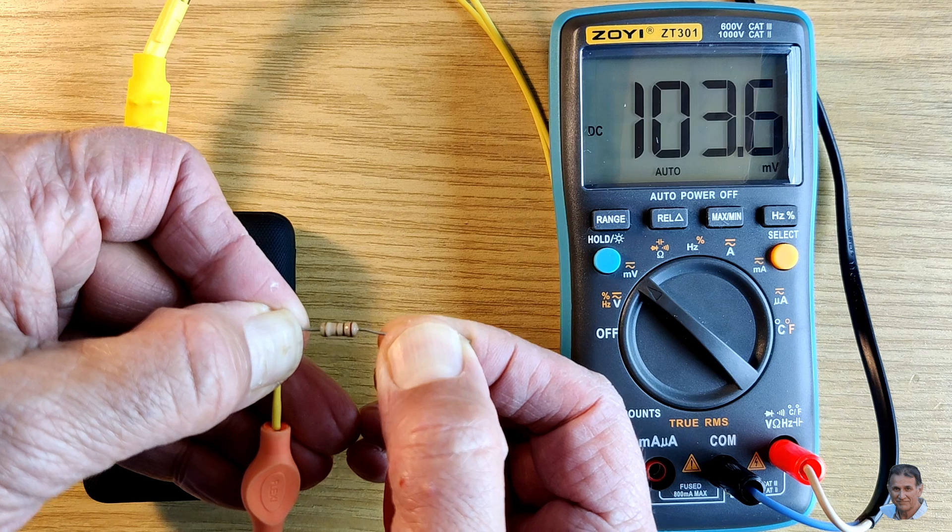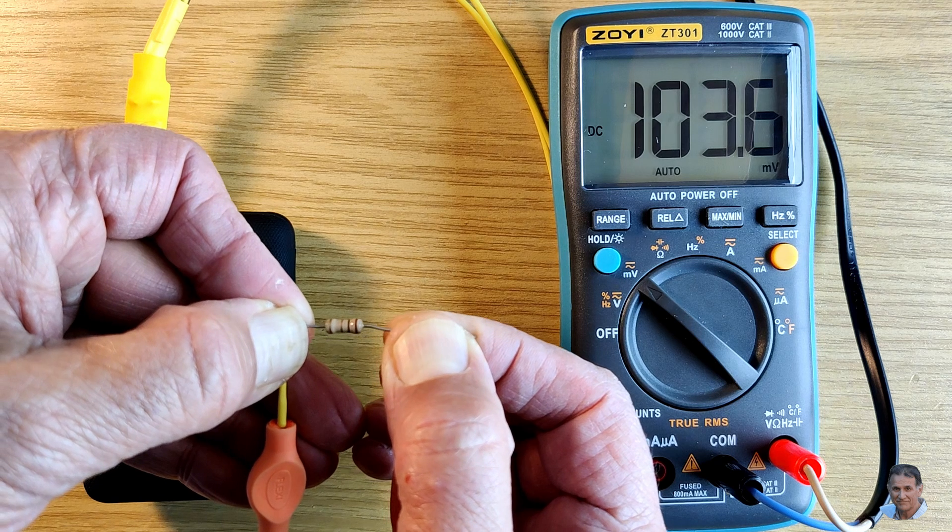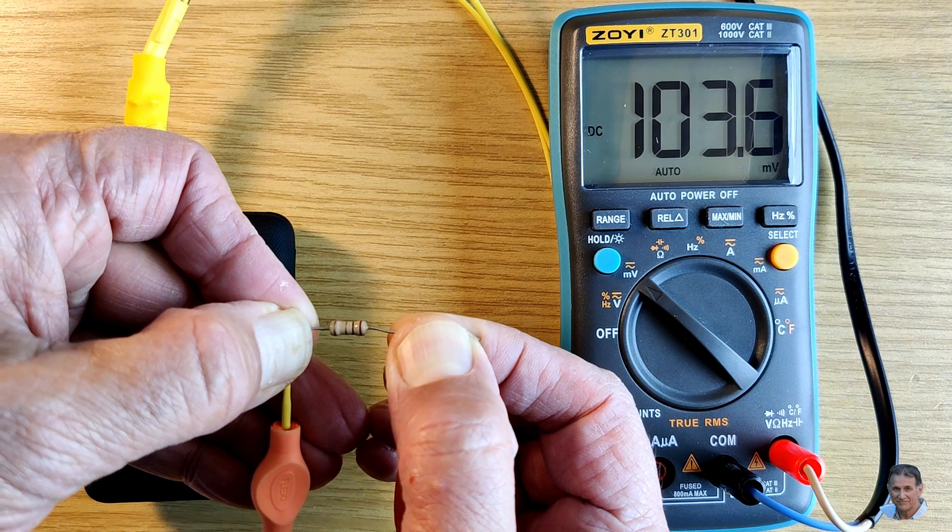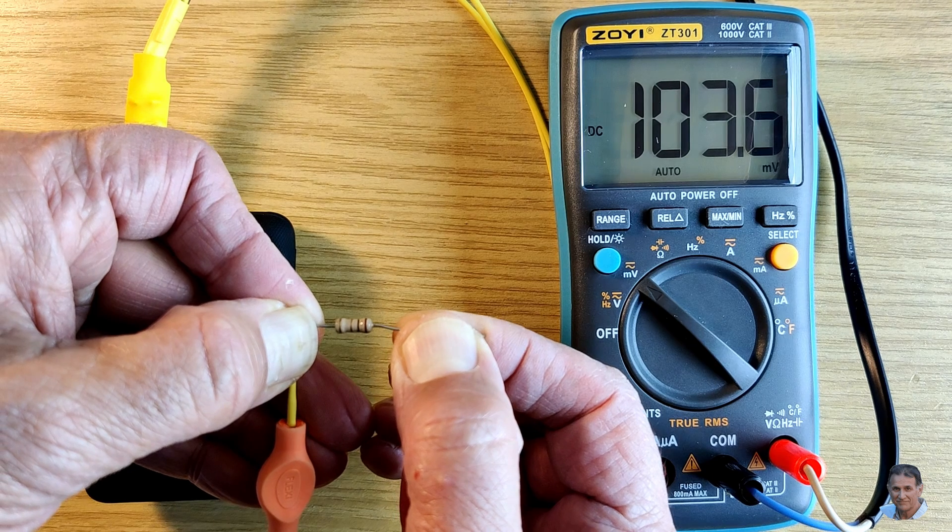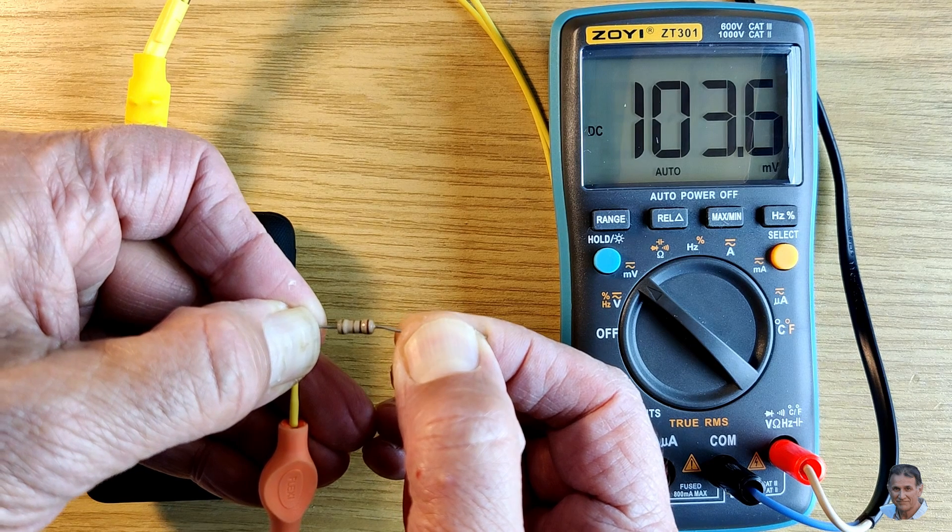This one ohm resistor shows 103.6 millivolts. Multiplying by 10 gives you 1036 milliohms which is 1.036 ohms.